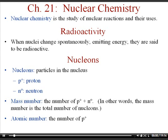The atomic number of an element is the whole number on the periodic table — it's the number of protons. To calculate the number of neutrons, subtract the atomic number from the mass number. In other words, take the protons plus neutrons (the mass number) and subtract out the protons.